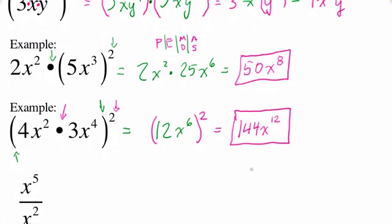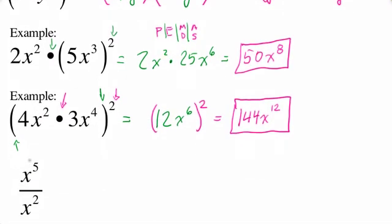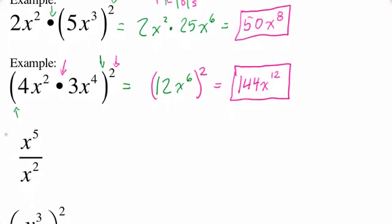Let's go on with a couple more rules. Going back, rule 1 was the product rule, rule 2 was power to a power, rule 3 was product to a power. This will be rule 4 and rule 5. Here we have a quotient, so we're going to use the quotient rule.